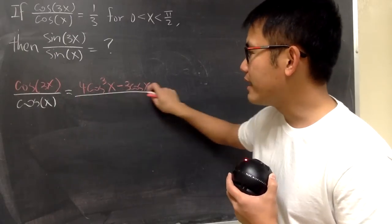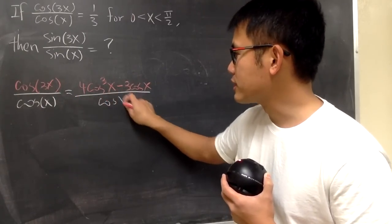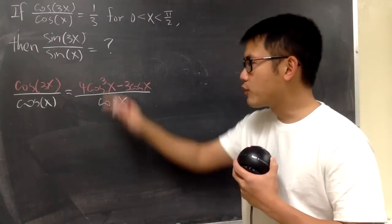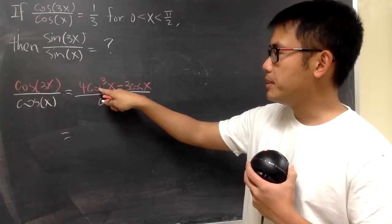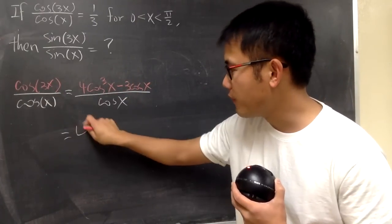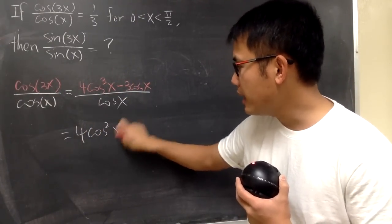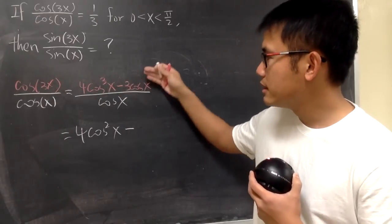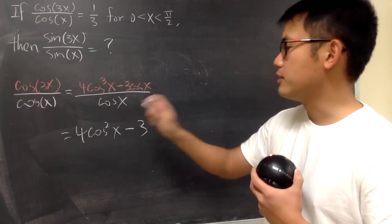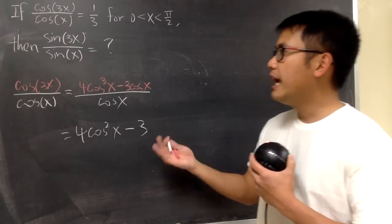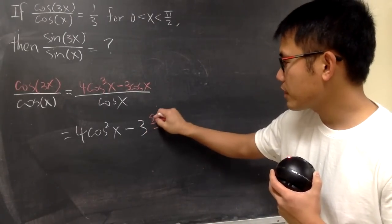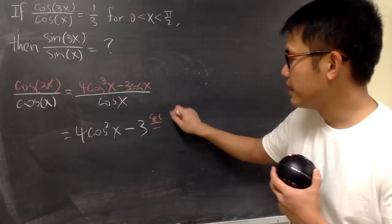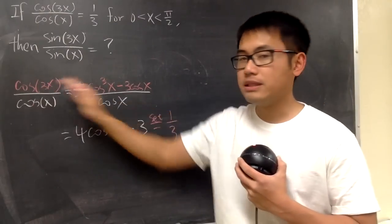Of course, we can split the fraction. When we do that, this is just going to be 4cos²x and then minus 3. Now we can just set this equal to 1/3, because originally this was equal to that.